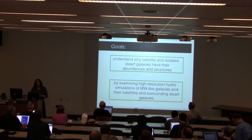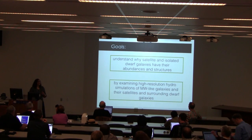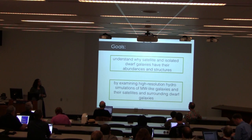We're interested in understanding why satellite galaxies and isolated galaxies have their abundances and structures, in order to understand things like the missing satellite problem, core versus cusp, and too big to fail.